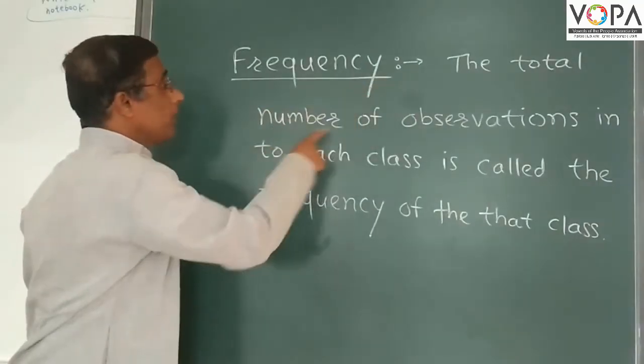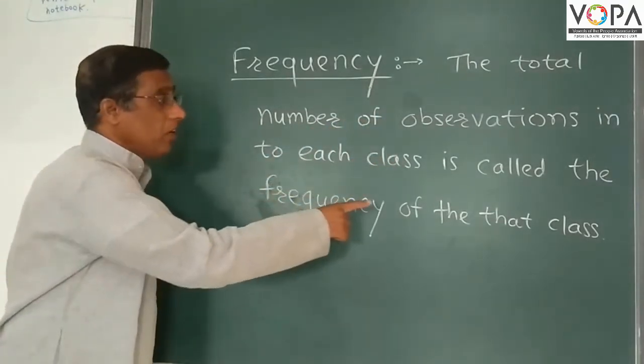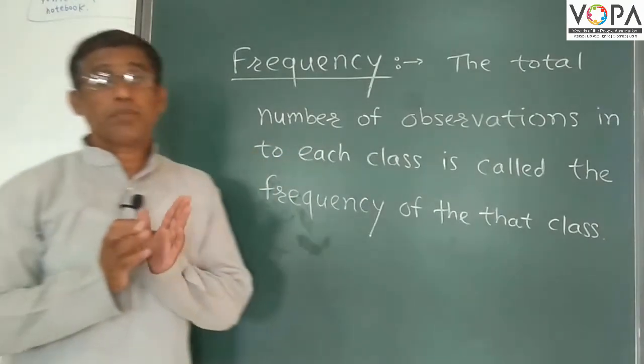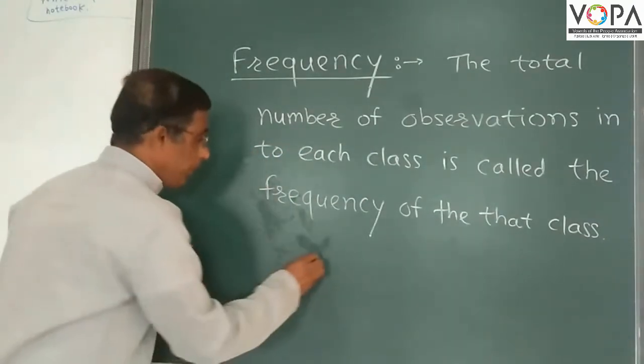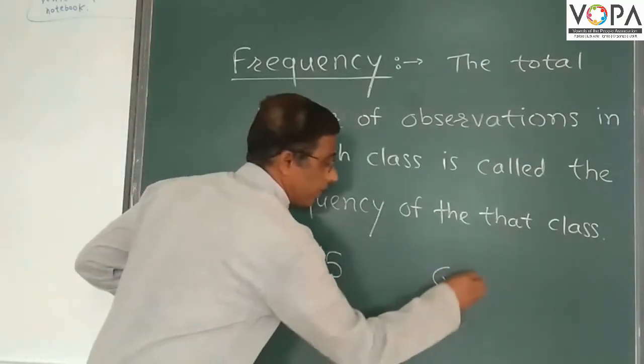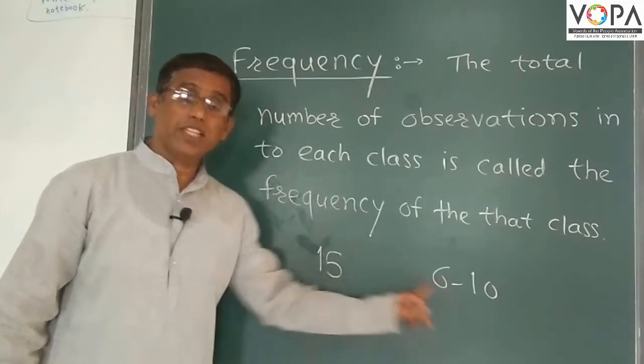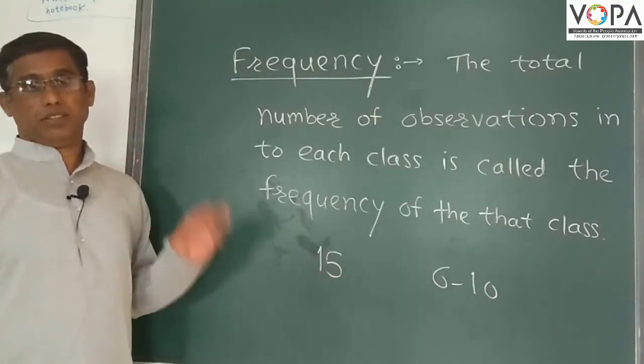Frequency: the total number of observations into each class is called the frequency of that class. Suppose 50 observations are in the class 6 to 10. Means frequency of the class 6 to 10 is 15.